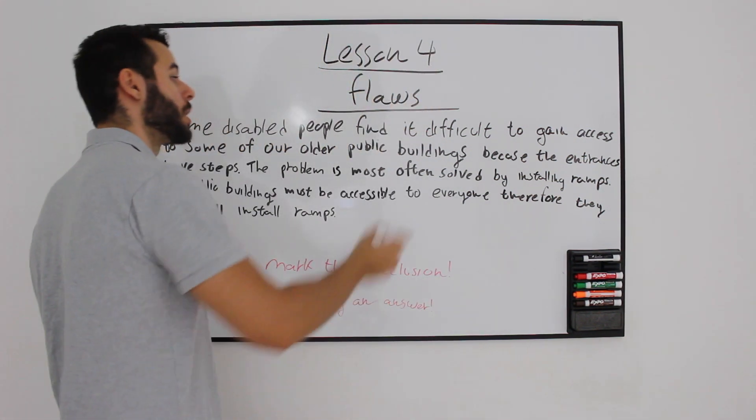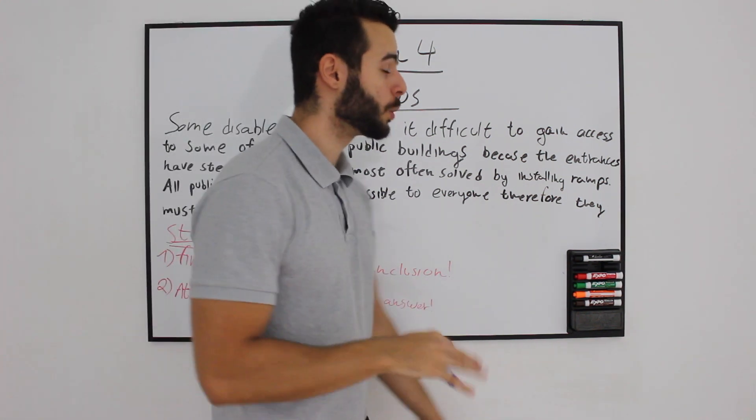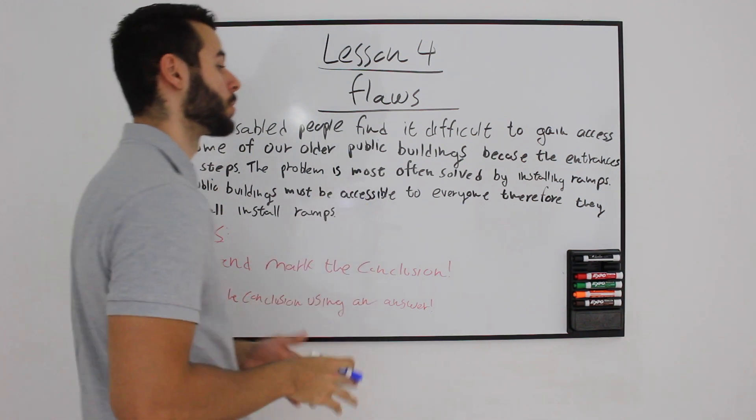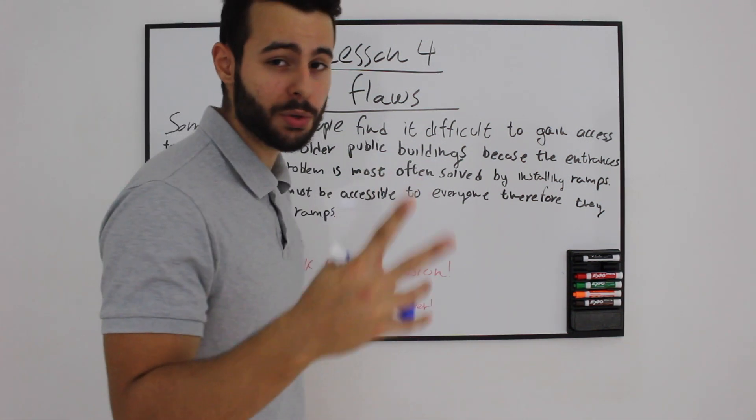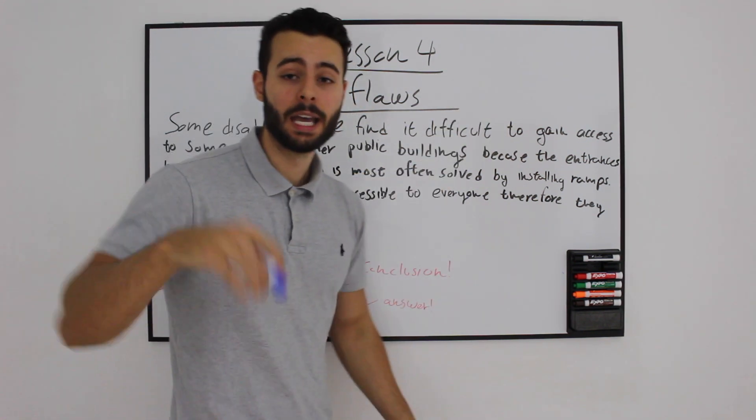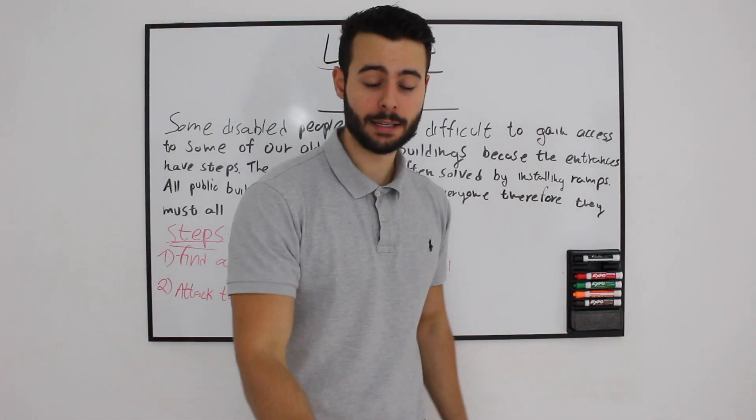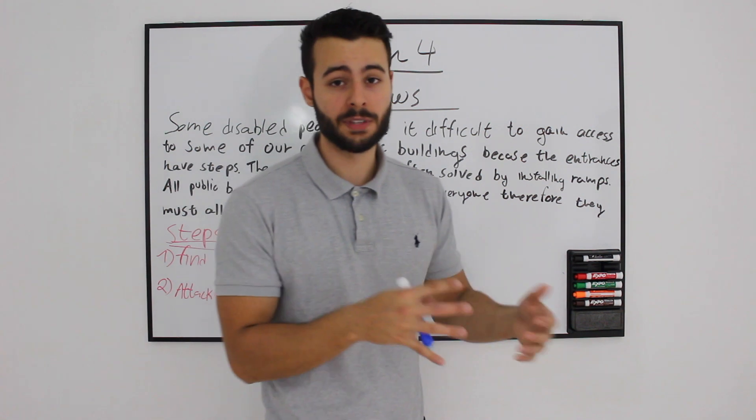Today we are going to touch flaws and identifying the flaws inside the paragraph. Usually we'll have a short paragraph that actually has a very straightforward conclusion and you will need to use 2 steps usually for those kind of questions in order to actually find and recognize something inside the answers that actually gives you the flaw.